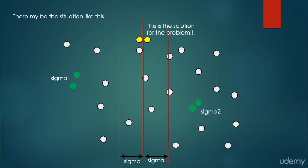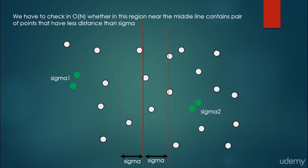We cope with this problem by considering that the minimum distance seen so far is sigma. We just have to consider an interval of length 2 sigma in the neighborhood of the middle line, and check in linear time whether this region contains a pair of points with distance less than the calculated sigma — because there could be a point in the left subset and a point in the right subset that are the closest pair in the original array.